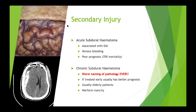We've already gone through the secondary injury with acute subdural hematomas - how they're associated with diffuse brain injury, the majority being venous bleeds, and why they're associated with poor prognosis. And I've already explained why I dislike the naming of chronic subdural pathology on CT scans.